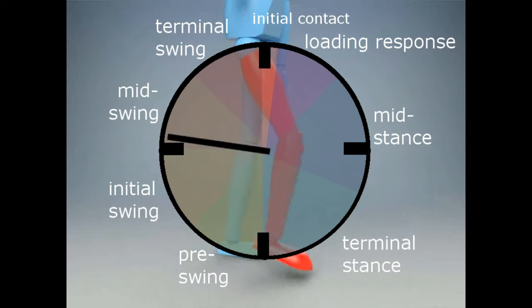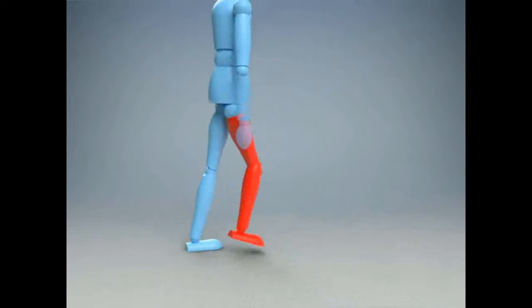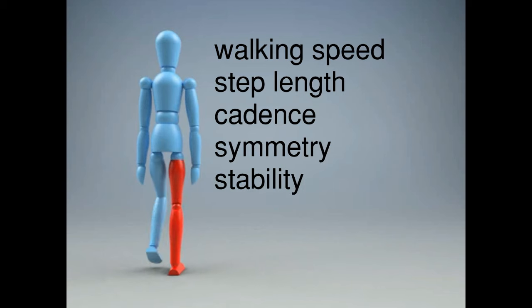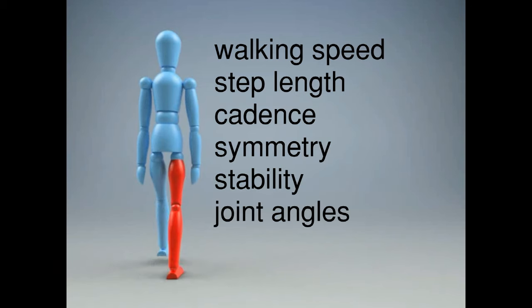By analyzing the gait cycle, we can measure things like walking speed, step length, cadence, symmetry, stability, and the angles at the hip, knee, and ankle joints. These are all helpful indicators that our patient is healthy and functioning well physiologically.